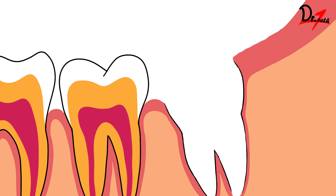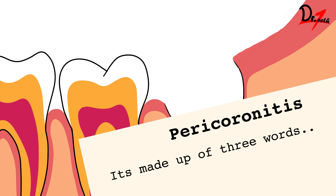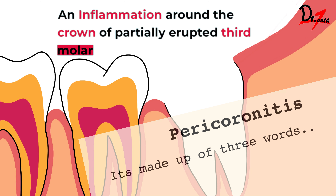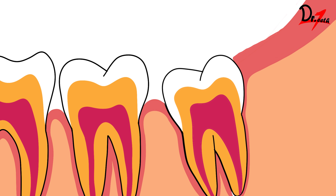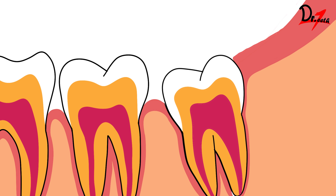Pericoronitis is made up of three words: 'peri' means around, 'corona' refers to the crown — that is the occluding surface of the teeth — and 'itis' refers to inflammation. So pericoronitis means the inflammation that is occurring around a tooth. It is a common pathological condition in young adults causing pain and swelling around the last tooth of the mouth, that is the wisdom tooth or the third molar.